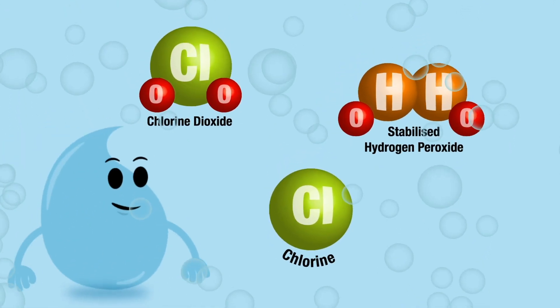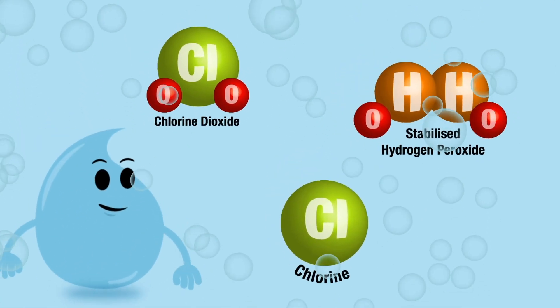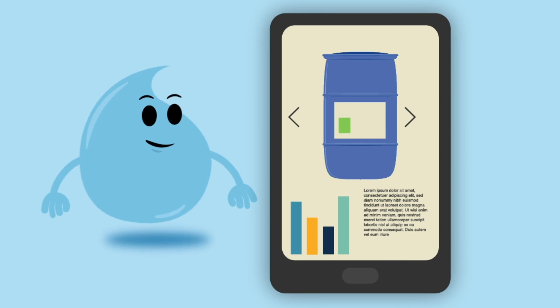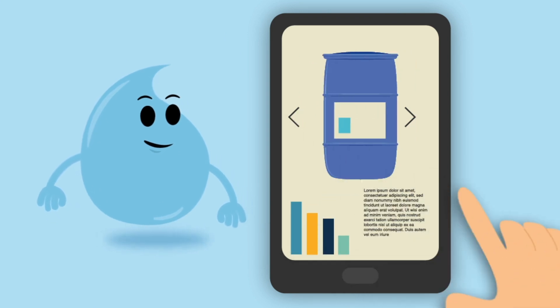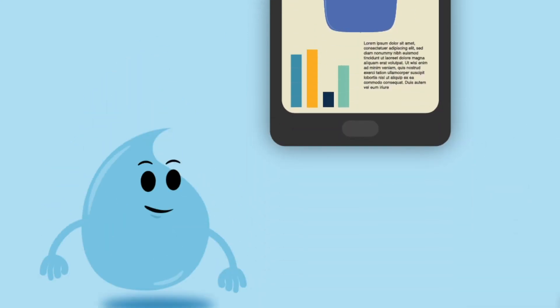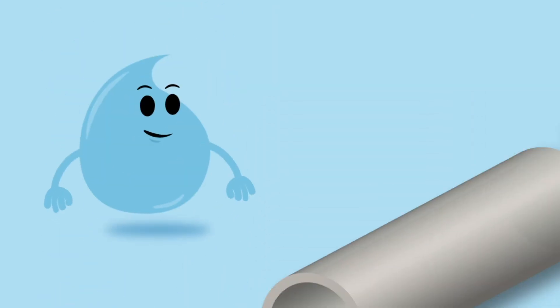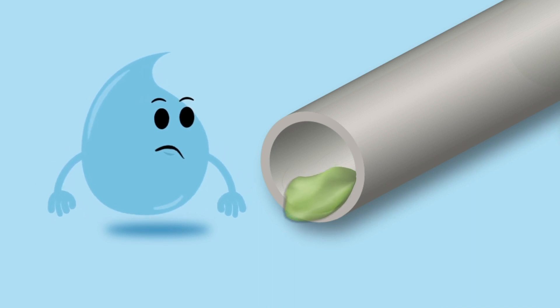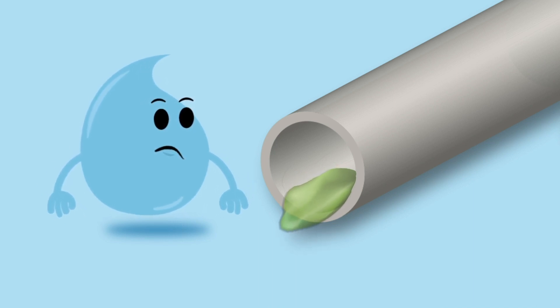A variety of chemicals are used to clean water in different situations. It's important to use the correct one for your system, as they all have different properties. It's also important to consider the effect on different types of biofilm.